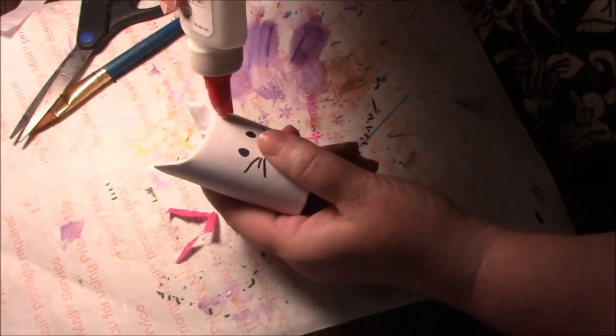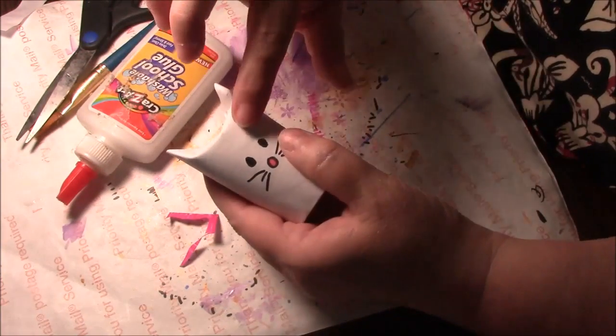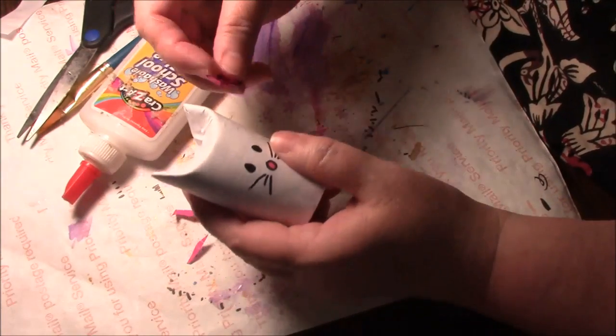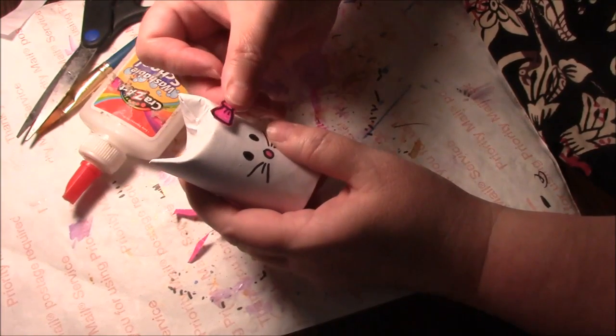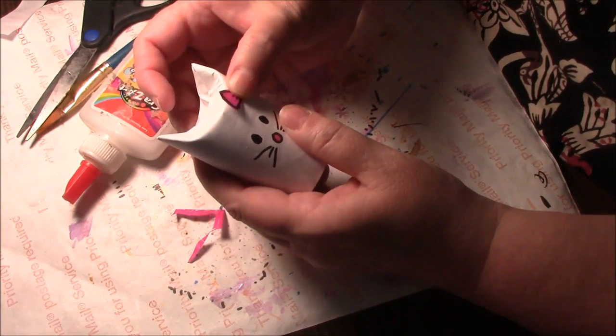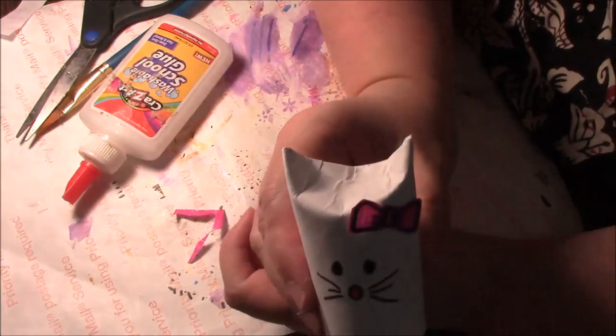And then we are going to just glue this right here on our little kitty. You know, the secret to this kind of glue is like to not put too much like I just did. It's really better if it's just not too much and then it sticks better. And there's no right way or wrong way for this bow, so I'm just going to stick it right there at an angle. And look how cute this is.